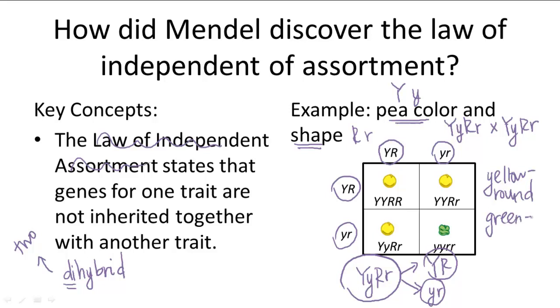So that means you can never have a yellow wrinkled pea or a green round pea. But this is not the case because the law of independent assortment is actually true. And we talk in more detail about how to appropriately perform a dihybrid cross in another video.